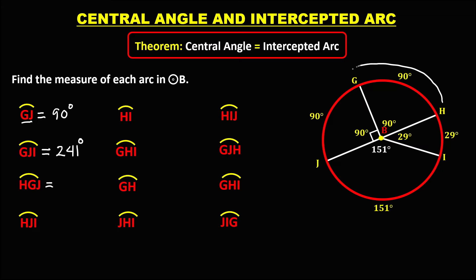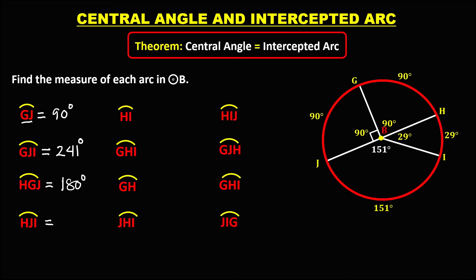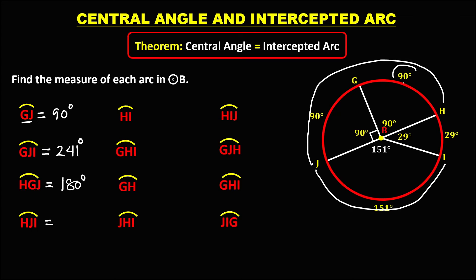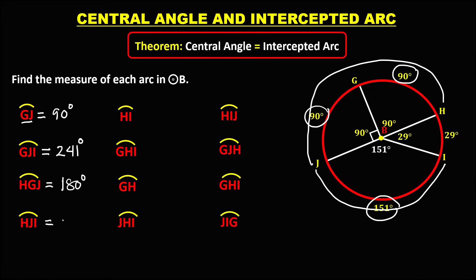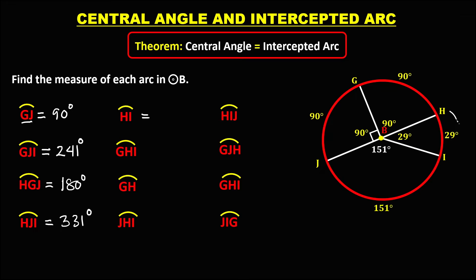For arc HGJ, we add 90 plus 90, which equals 180 degrees. For arc HJI, we add all the relevant angles: 90 plus 90 plus 151, which equals 331 degrees.